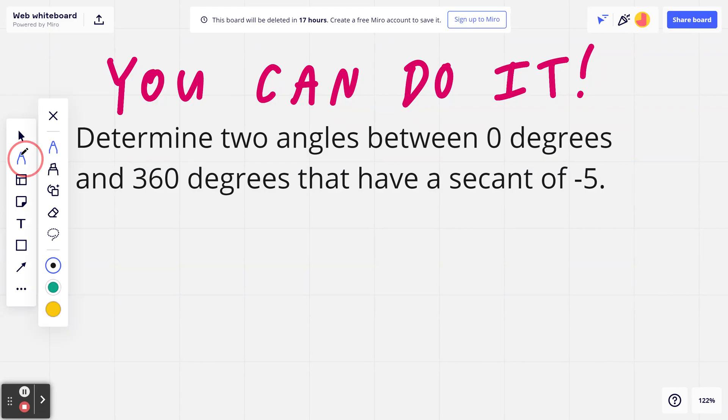Step number 1. If you think about the given, secant theta equals negative 5. Think about negative 5 in terms of negative 5 divided by 1.